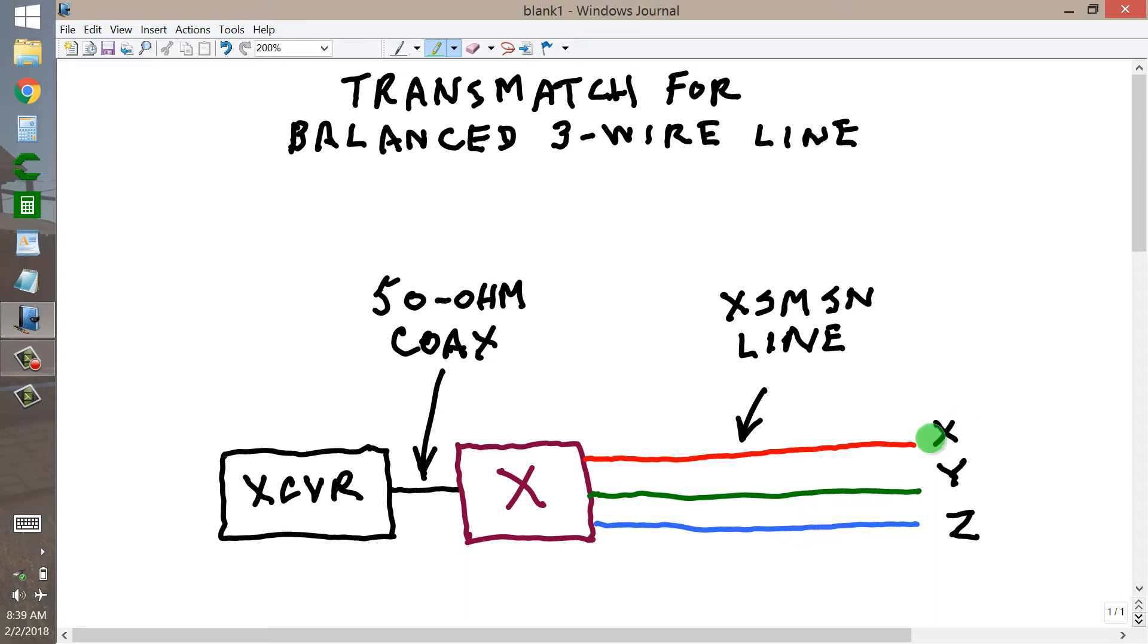The antenna at the end of this transmission line, conductors X, Y, and Z, comprises 3 quarter-wavelength radiators, spaced at 120 degree angles in a plane, all in a single plane.